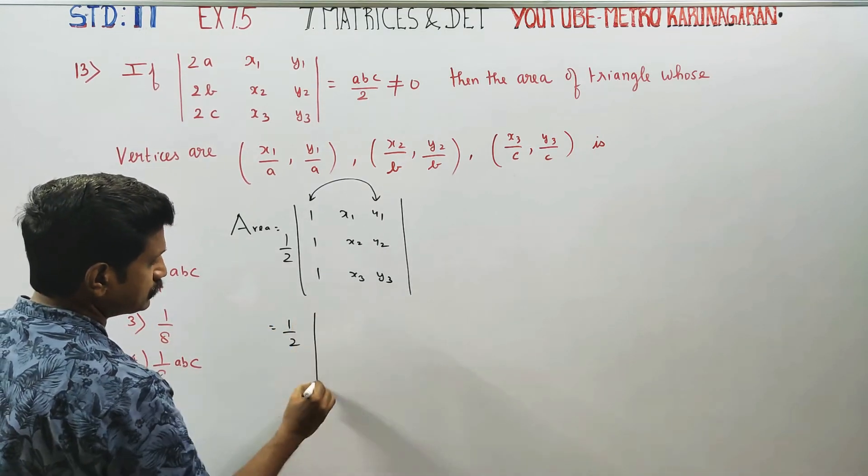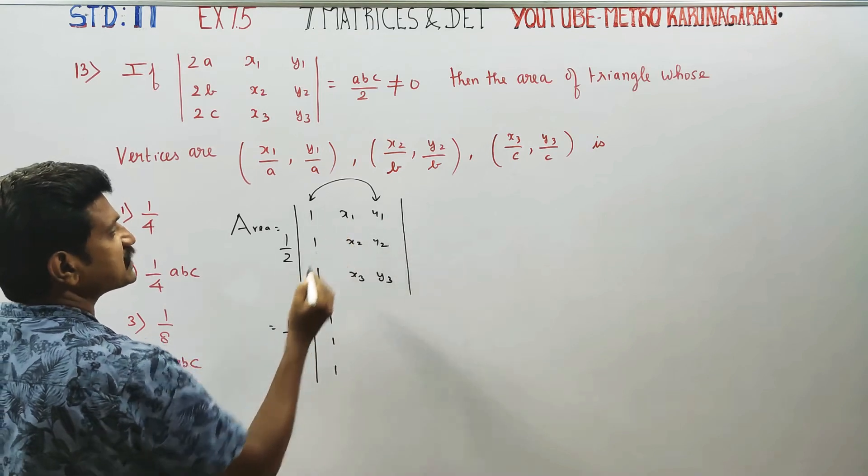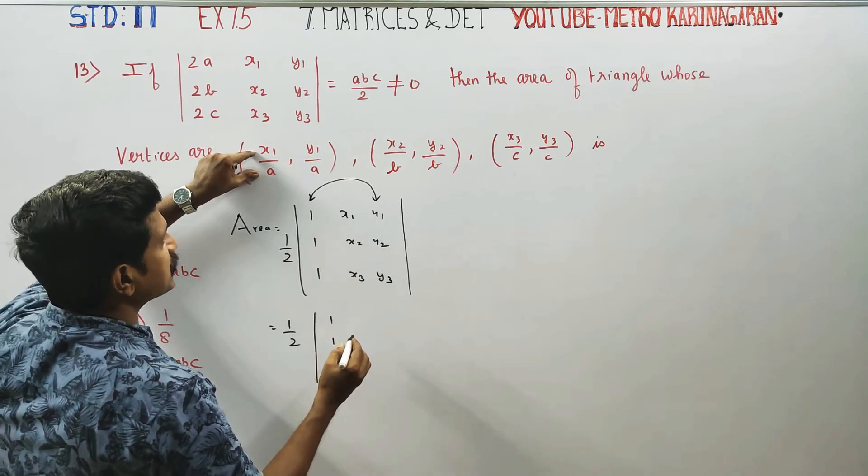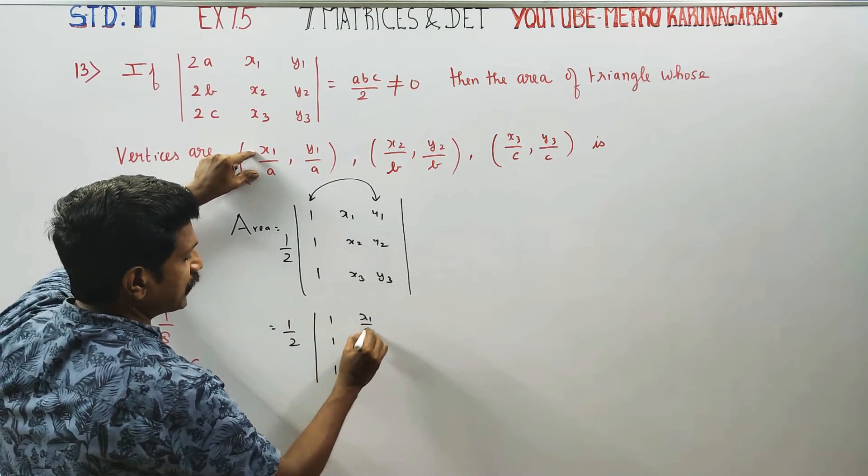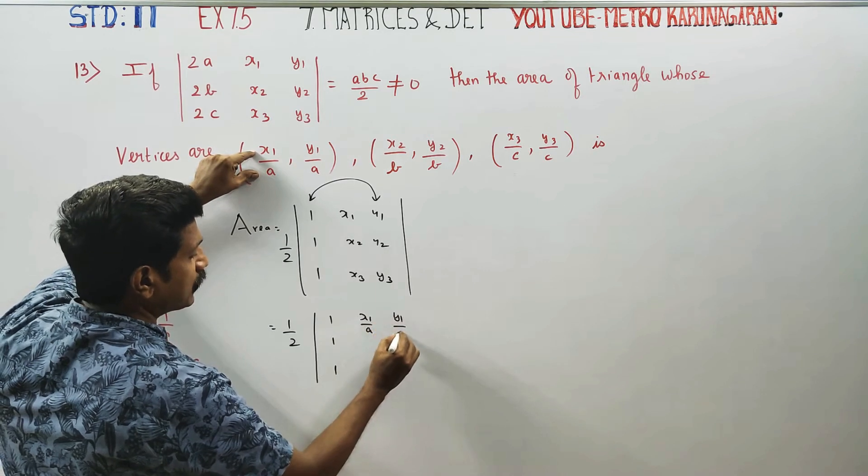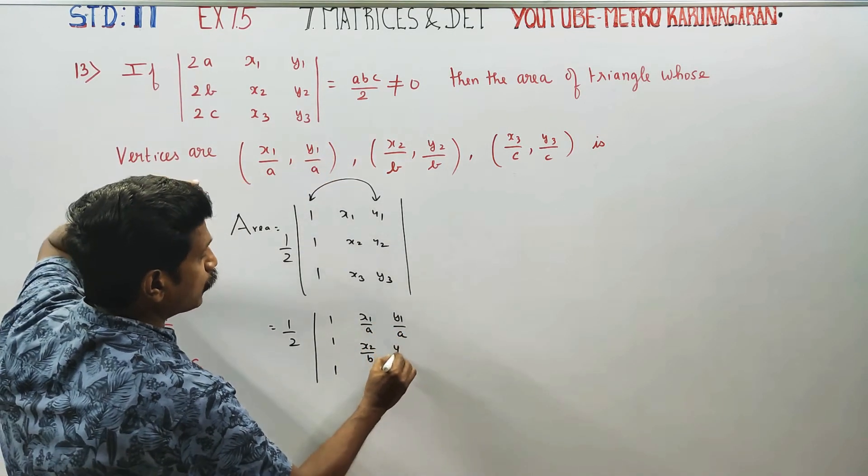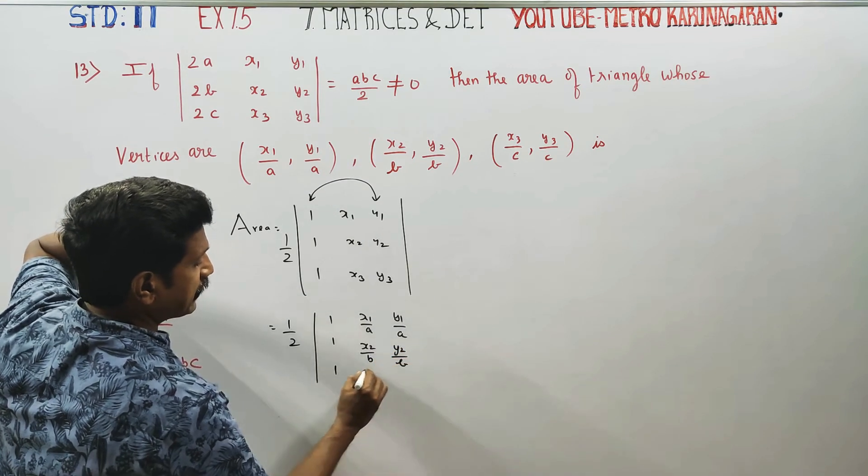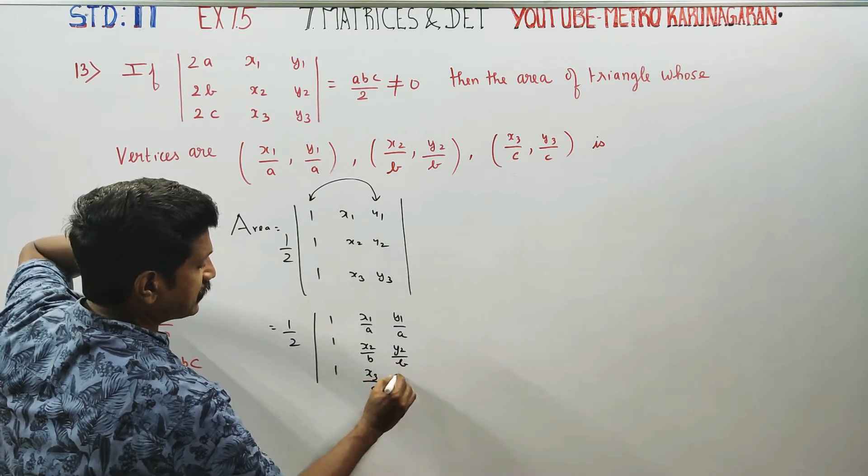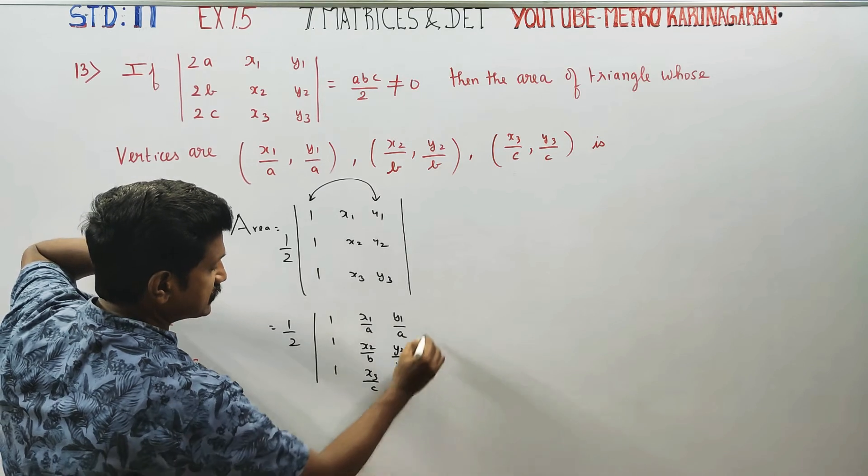One by two times the determinant. Now let me identify the coordinates: x1 is a, y1 is a, x2 is b, y2 is b, x3 is c, y3 is c.